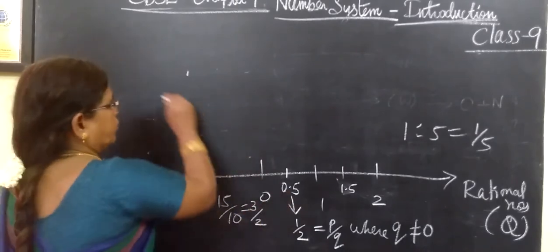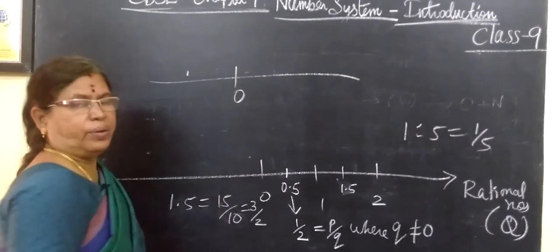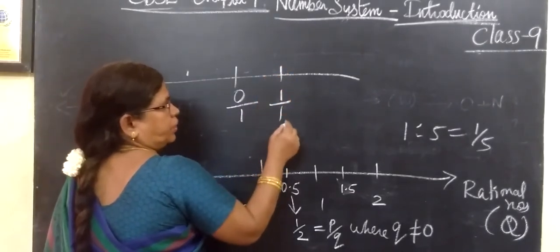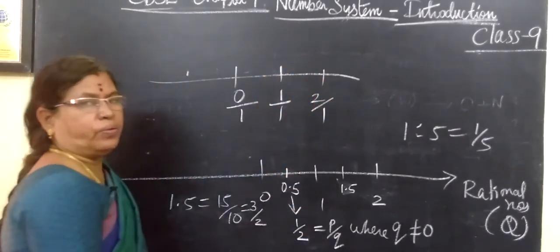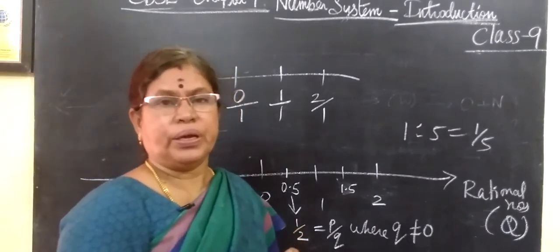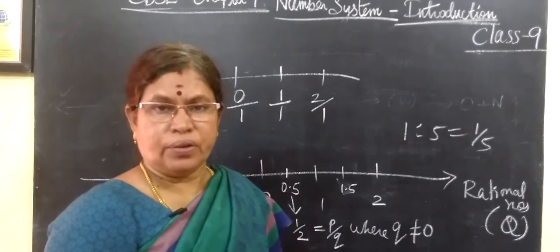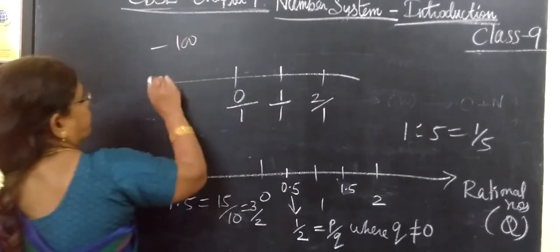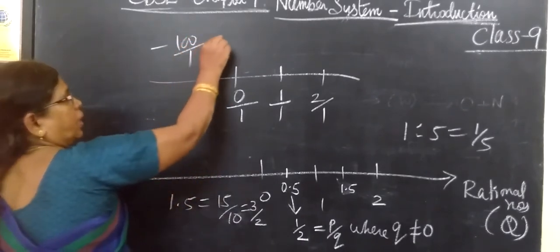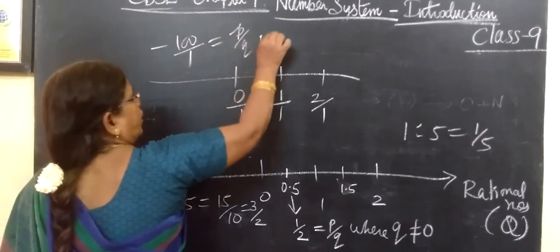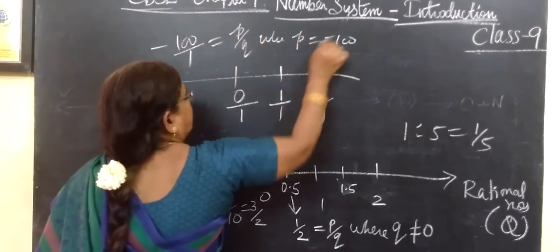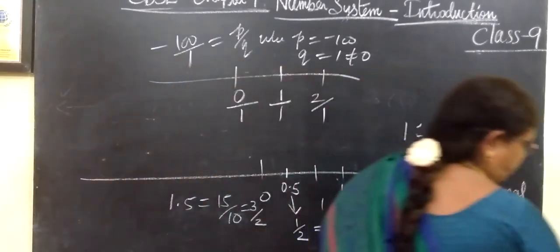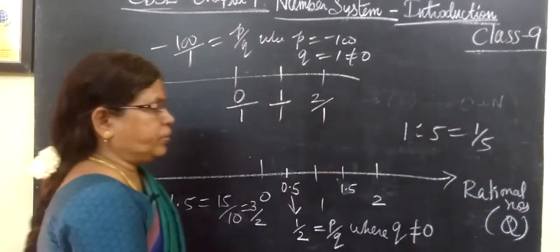Is 0 a rational number? Yes, because it can be written as 0 by 1. And 1 can be written as 1 by 1, 2 as 2 by 1. So all natural numbers, whole numbers, and integers are rational numbers. For example, minus 100 can be written as minus 100 by 1, which is of the form P by Q where P = −100 and Q = 1, and Q ≠ 0. So if a number is in the form P by Q, we call it a rational number.